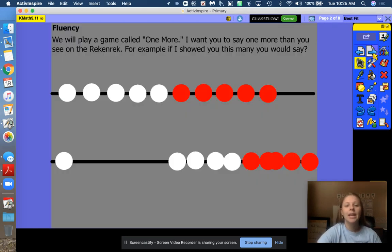All right, we're going to play a game called One More. I want you to say one more than you see on the wrecking rack. So for example, we have 10 up here and I want you to say 10 and 1, 11. Good, say that for me. All right, we're going to do it again, but I'm going to move one over. Now we're going to say 10 and 2, 12.